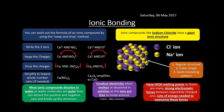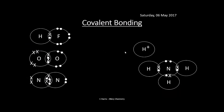Ionic compounds have very high melting points because there are lots of strong electrostatic attractions that require a lot of energy to overcome. This is why sodium chloride and other ionic compounds have such high melting points. Make sure you include keywords like 'strong electrostatic forces' and 'lots of energy needed to overcome them' in your answers.